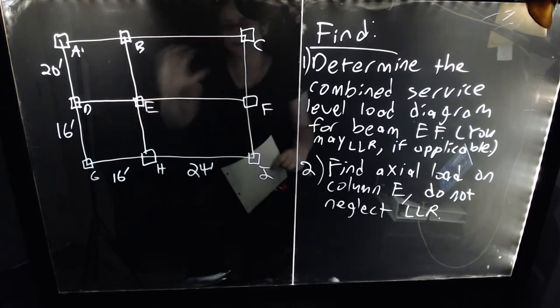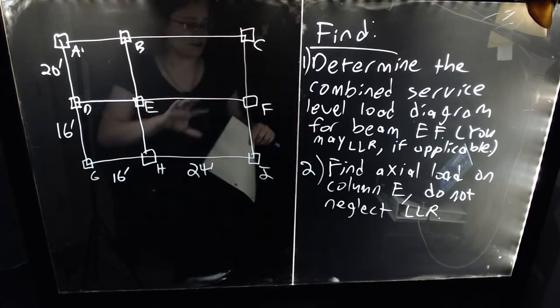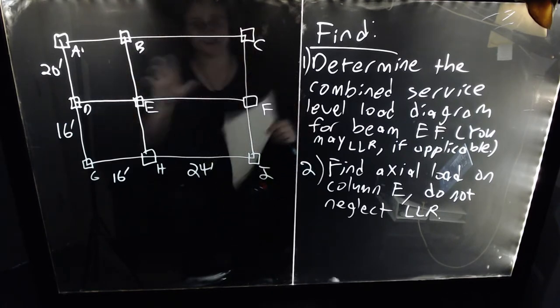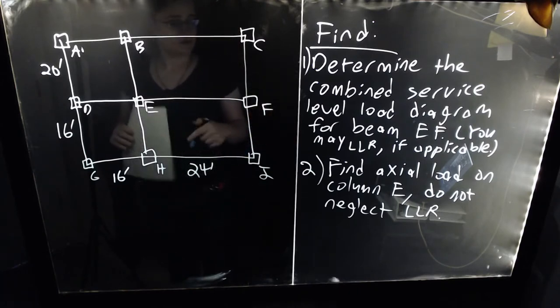The really tricky part is that beam EF will have a maximum tributary width in the middle of 10 feet on one side, but only 8 feet on the other side, so that does add a few interesting complications. I specifically designed this problem to create some complex loadings, and we will be looking at it as we move through. So we have all our givens, we know what we're looking for — let's begin.